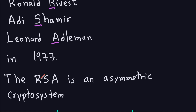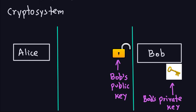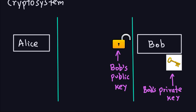As mentioned, the RSA is an asymmetric cryptosystem, also called a public key cryptosystem, which means the keys for encryption and decryption are different. We have the same situation as before — Alice and Bob want to communicate through an insecure channel, and of course Eve is listening to this communication.